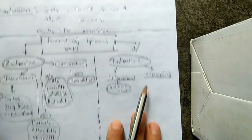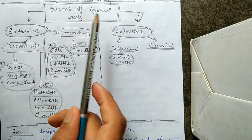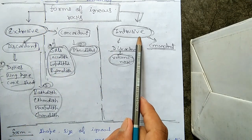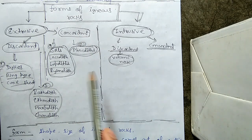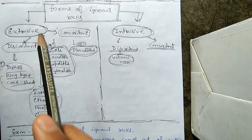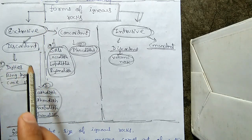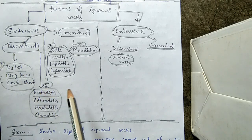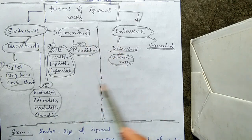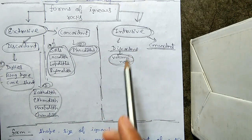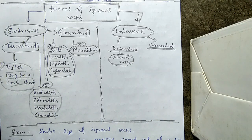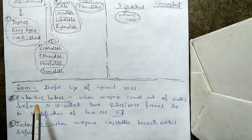Now moving to the forms of igneous rocks. There are two forms: extrusive bodies and intrusive bodies. These are further divided into discordant and concordant. Discordant extrusive bodies are divided into dykes, ring dykes, and cone sheets, while the other category contains batholith, ethmolith, harpolith, and conolith. Concordant bodies contain sills, lacolith, lopolith, bismalith, and phacolith. Form refers to the shape and size of an igneous rock body.